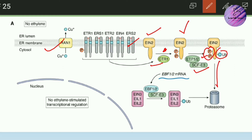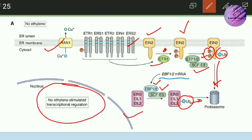The SCF E3 complex with F-box proteins ETP1 and ETP2 recognizes the phosphorylated EIN2, adding a ubiquitin tag, and it is processed through the proteasome. Additionally, EIN3, EIL1, and EIL2 — transcription factors involved in ethylene signaling — are also tagged for ubiquitination by SCF E3 with EBF1 and EBF2, and degraded. As a result, there is no ethylene-stimulated transcriptional regulation. The two key events are: EIN2 degradation via SCF E3/ETP1/ETP2, and transcription factor degradation via SCF E3/EBF1/EBF2.